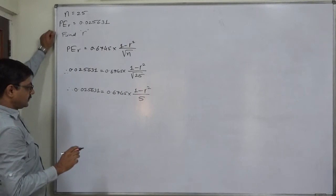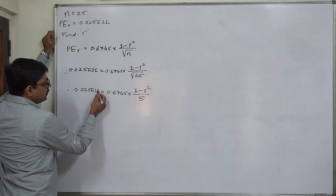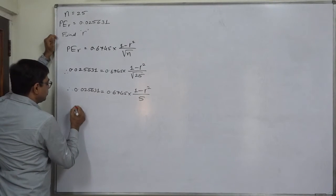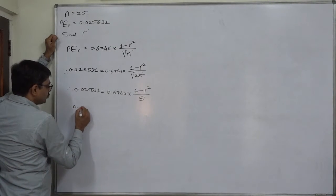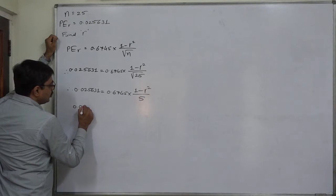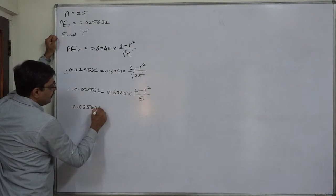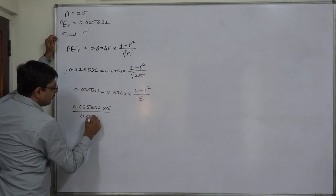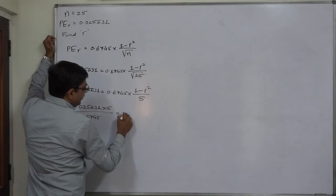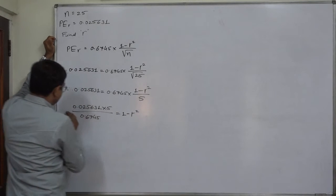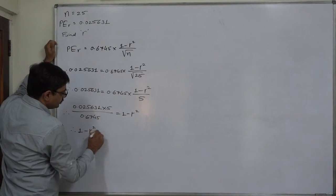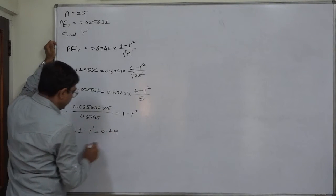Now, multiplying both sides by 5 and dividing by 0.6745, we get: (0.025631 × 5) / 0.6745 = 1 - r². Therefore, 1 - r² = 0.19.